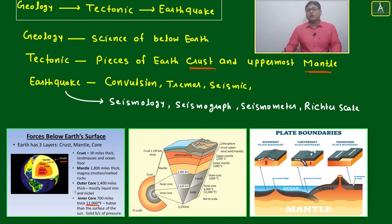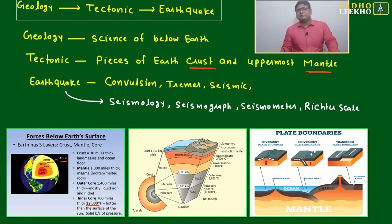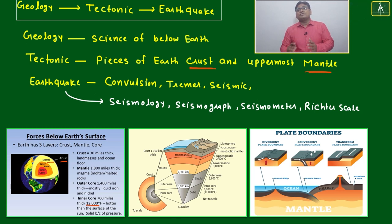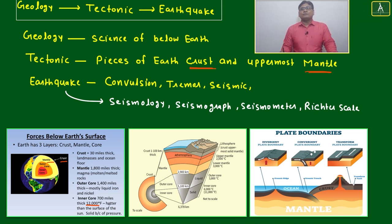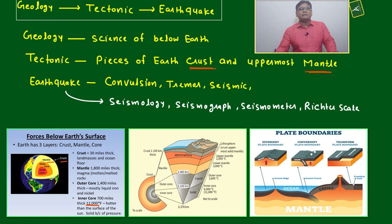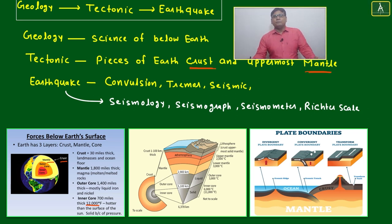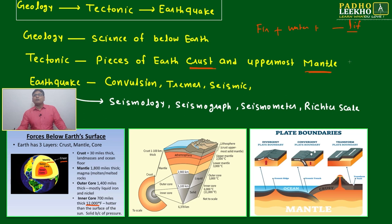Everything keeps moving at high speed — all conditions are against life, yet life has survived. Why? Because even when things oppose each other, life survives through friction and balance. All five elements have opposing natures — on one side fire, on the other side water, totally opposite — yet when mixed together, life emerges.